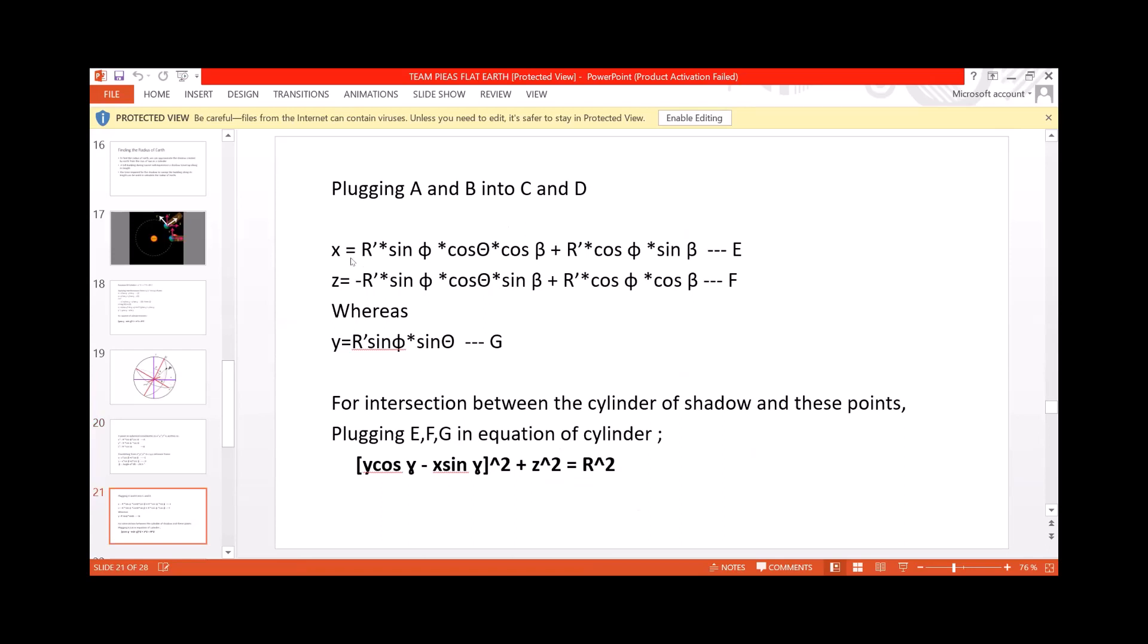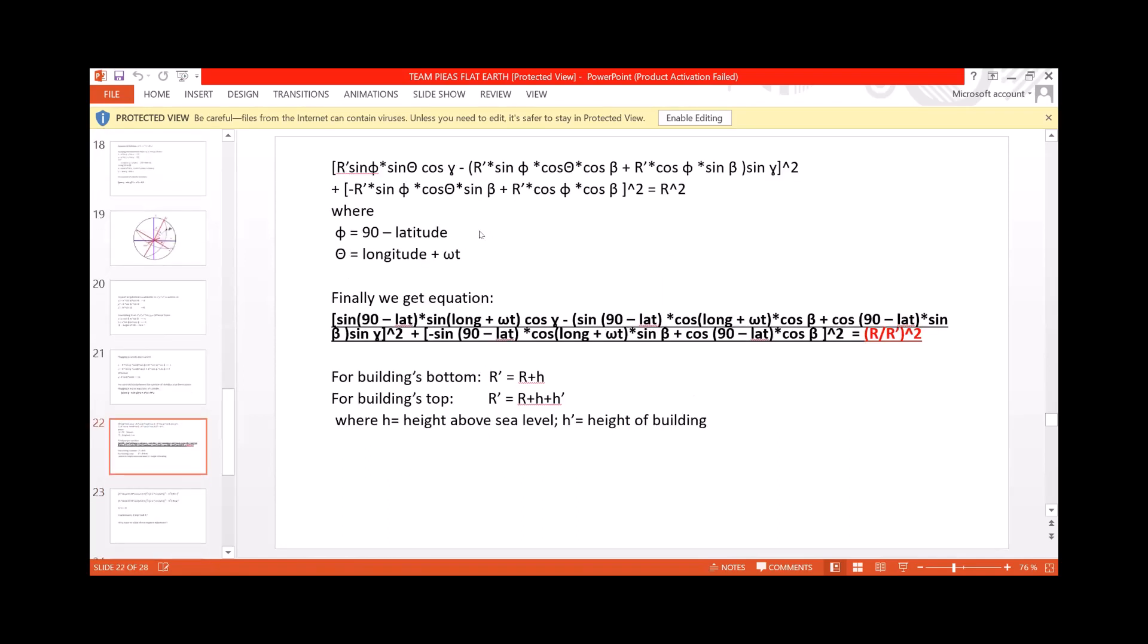Now I have the position of point P in the X, Y, and Z, all three positions. I have the position of point P. These are the function of time, since this theta is a function of time. And I also have an equation of the cylinder in this absolute coordinate system. Now what happens, when the top or the bottom of the building intersects this cylinder, then these points become the part of that cylinder. So I will put X, Y, and Z from these equations into the equation of the cylinder, which forms the shadow of the earth. Plug in all these equations here, these values of X, Y, and Z. And from the geometry, you can see that phi is related to latitude with this relationship. And theta is a function of time, which will change like this.